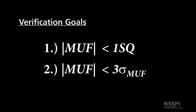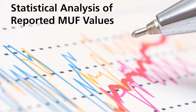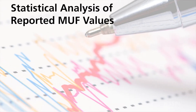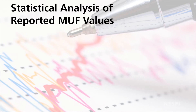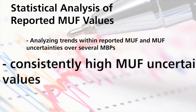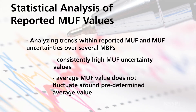If these goals are met, the inspector also checks the third verification goal to ensure that 3 sigma MUF is less than 1 SQ. Note that these safeguards goals would have been checked and verified during the process to obtain an operating license for the facility and thus are expected to be maintained. The inspector will also perform statistical analysis of the reported MUF values to verify the accuracy of reports submitted to the IAEA by the state. This analysis includes analyzing trends within the reported MUF and MUF uncertainty values over several material balance periods, or MBPs, such as consistently high values for MUF uncertainty or an average MUF value that does not fluctuate around a predetermined average value.